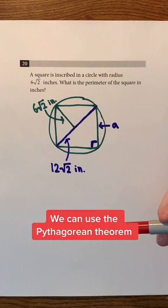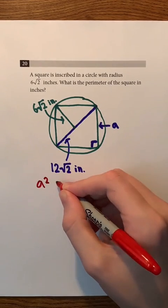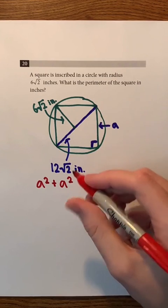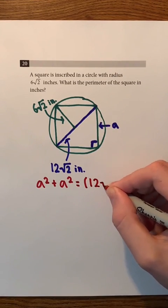Now, we can use the Pythagorean theorem because we have a right triangle. So, we're going to have A squared plus A squared, where A is the length of these two sides. Then, we're going to set this equal to the length of the hypotenuse squared, so 12 times the square root of 2 squared.